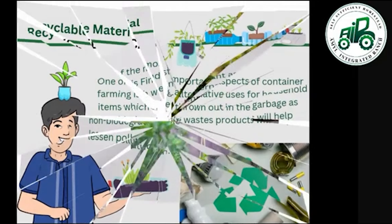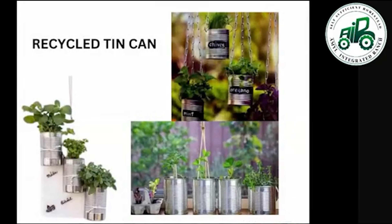Examples of recycled containers include tin cans planted with different plants — chives, mint, oregano, and any kind of plant will do.